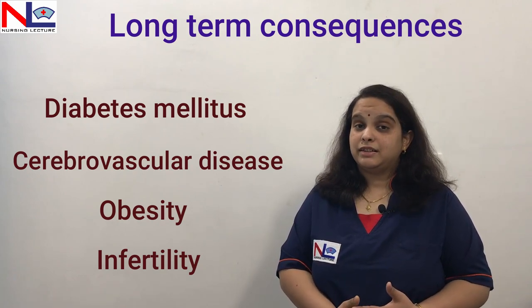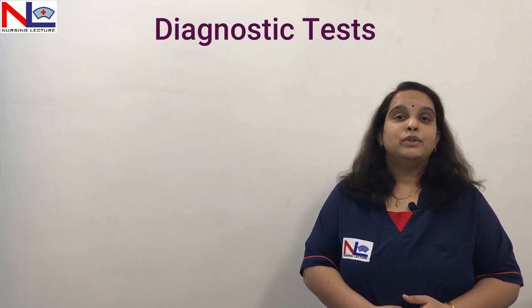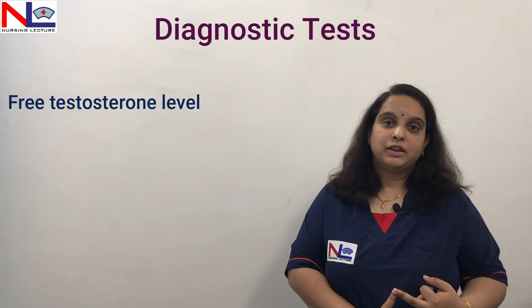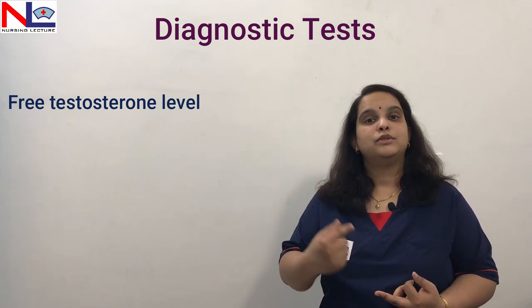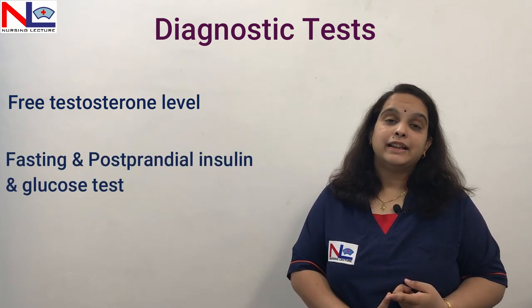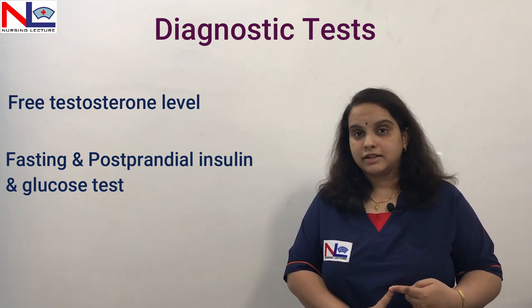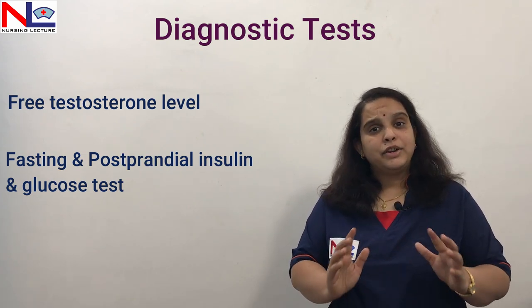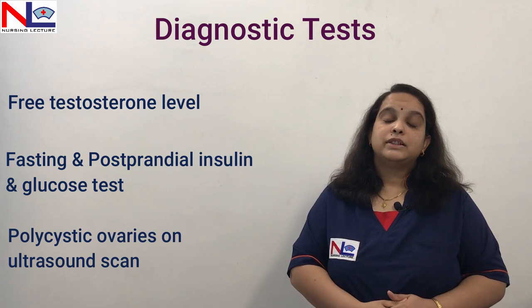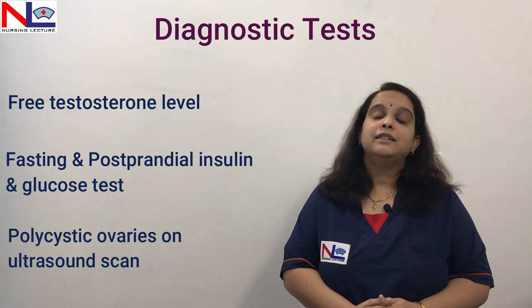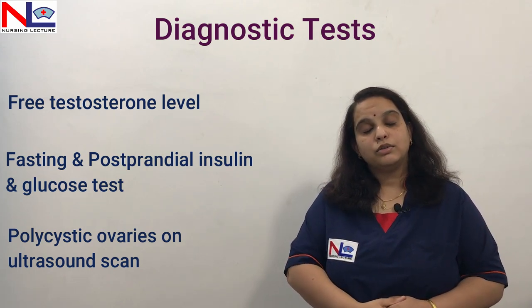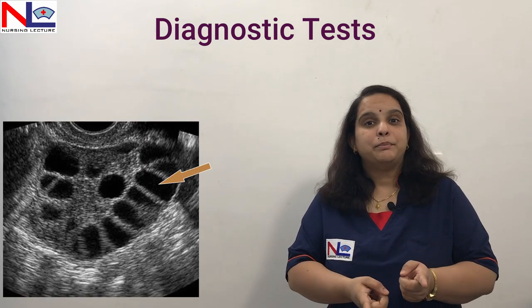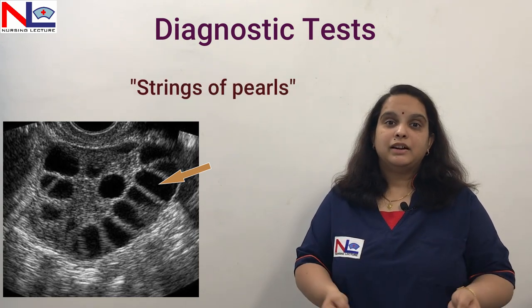How can we find out if a woman has PCOS? We can take a blood test — a high level of serum free testosterone confirms hyperandrogenism. We can also check fasting and postprandial insulin and glucose levels to assess insulin resistance. An ultrasound scan may reveal polycystic ovaries, showing a necklace-like or string-of-pearls appearance of follicles arranged in the periphery.